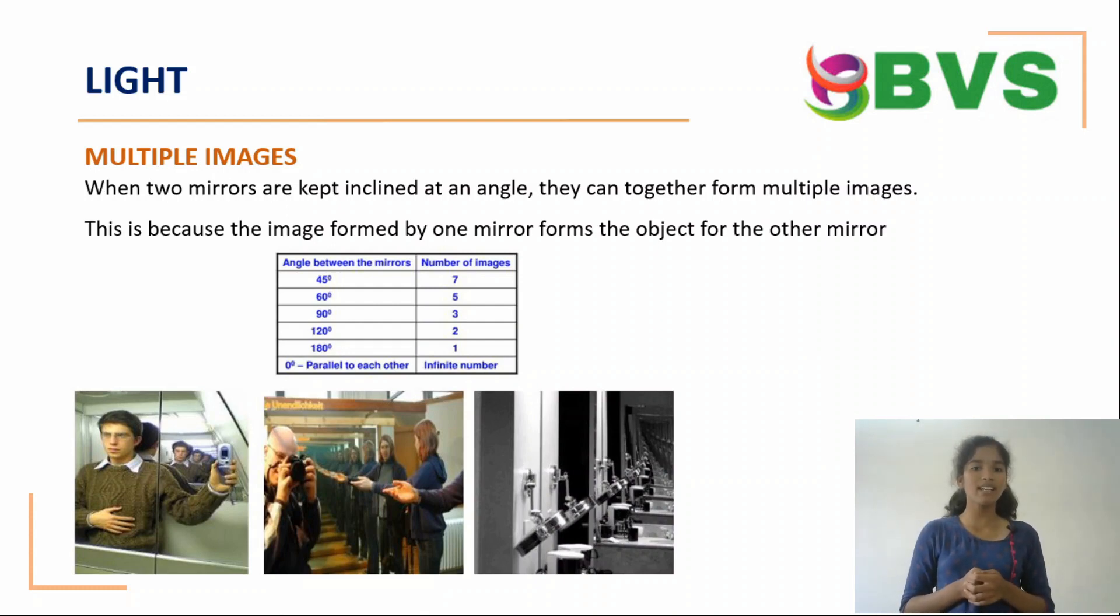If it is 60 degrees, then the number of images will be 5. If it is 90 degrees, then it is 3. If it is 120 degrees, it is 2. If it is 180 degrees, then it is 1. If the angle between the mirrors is 0 degrees, parallel to each other, the number of images will be infinite.